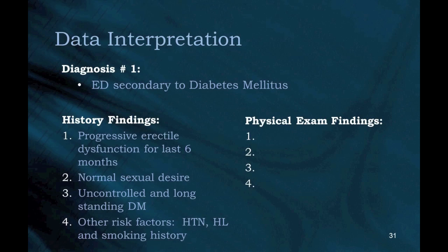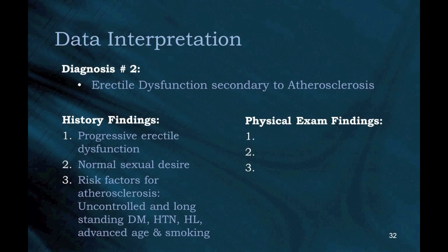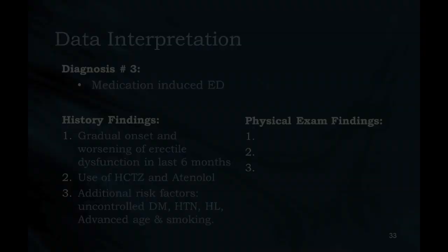Data Interpretation — Diagnosis 1: Erectile dysfunction secondary to diabetes mellitus. History findings: (1) Progressive erectile dysfunction for last 6 months; (2) Normal sexual desire; (3) Uncontrolled and long-standing diabetes mellitus; (4) Other risk factors: hypertension, hyperlipidemia, and smoking history. Diagnosis 2: Erectile dysfunction secondary to atherosclerosis. History findings: (1) Progressive erectile dysfunction; (2) Normal sexual desire; (3) Risk factors for atherosclerosis: uncontrolled and long-standing diabetes mellitus, hypertension, hyperlipidemia, advanced age, and smoking.